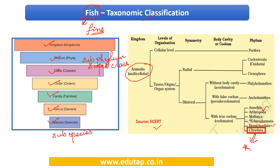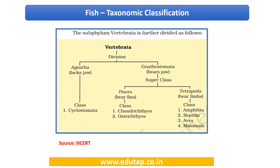Let us see which subphylum, superclass, and class fish belongs to. The phylum is Chordata and the subphylum is Vertebrata. We are not going to discuss why they are placed there — that is too technical and not in scope for our examination, though the reasons are mentioned in the document. Under Vertebrata, there are two divisions: Agnatha, which lacks jaws, and Gnathostomata, which bears jaws.